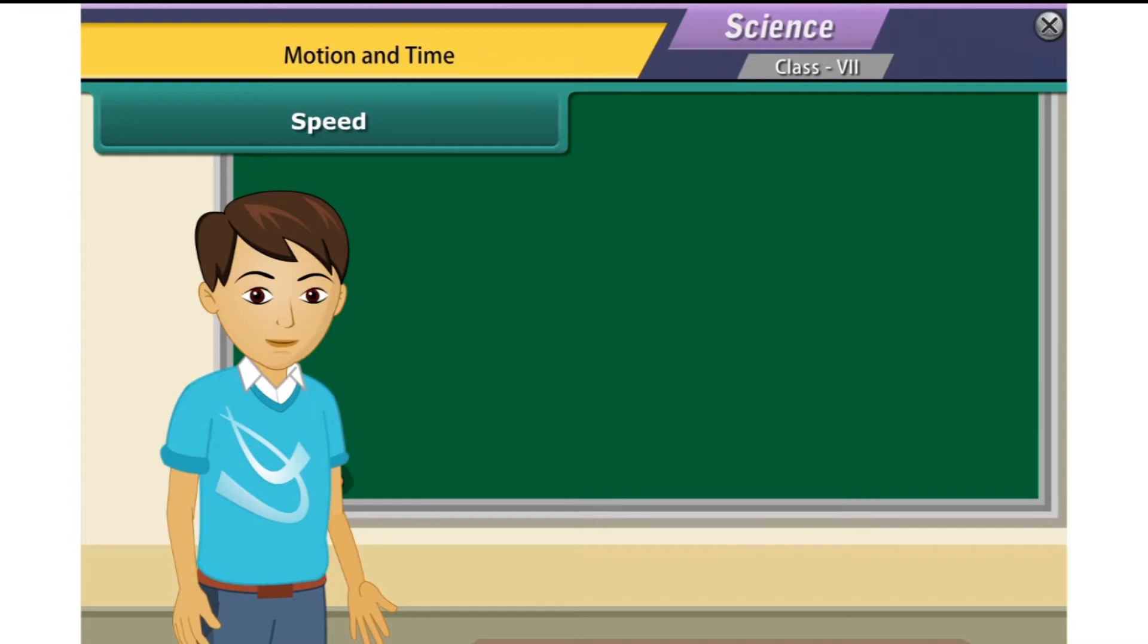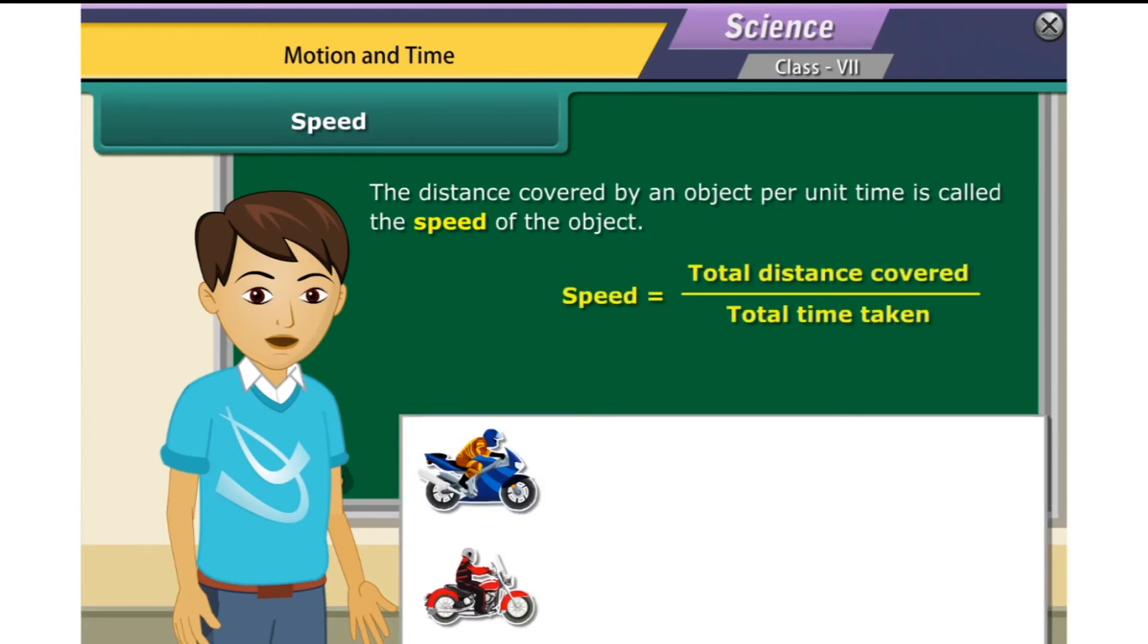The most convenient way of finding out which object moves faster than the others is to calculate and compare the distances covered by all the objects per unit time. The object that covers a greater distance per unit time is quite obviously faster. The distance covered by an object per unit time is called the speed of the object.